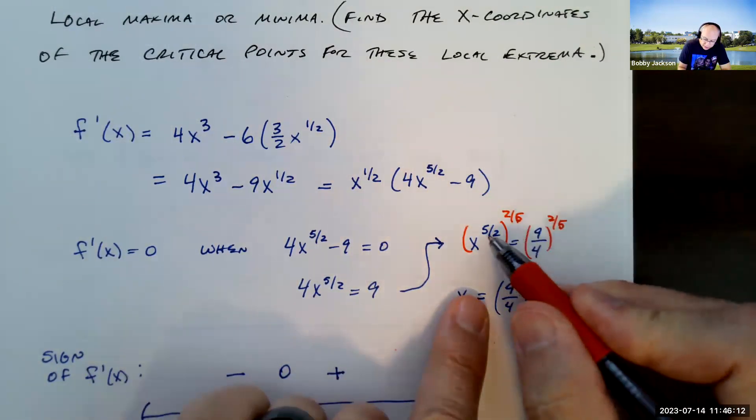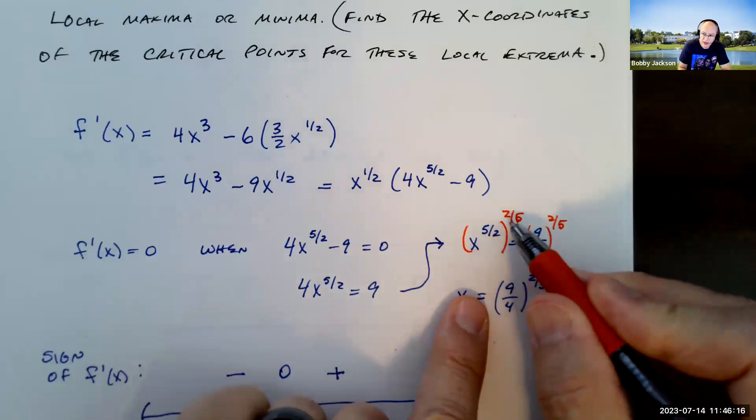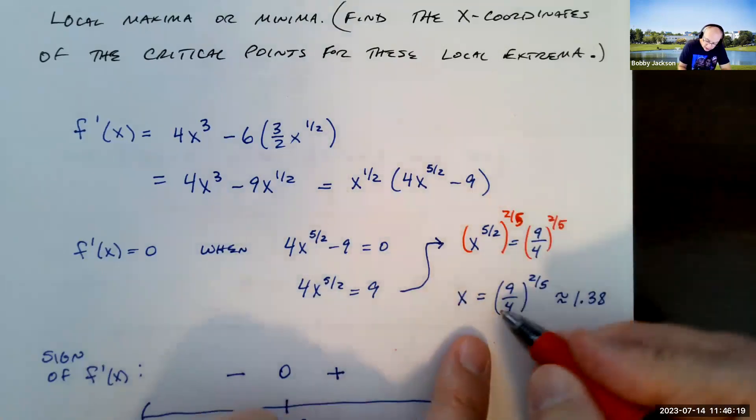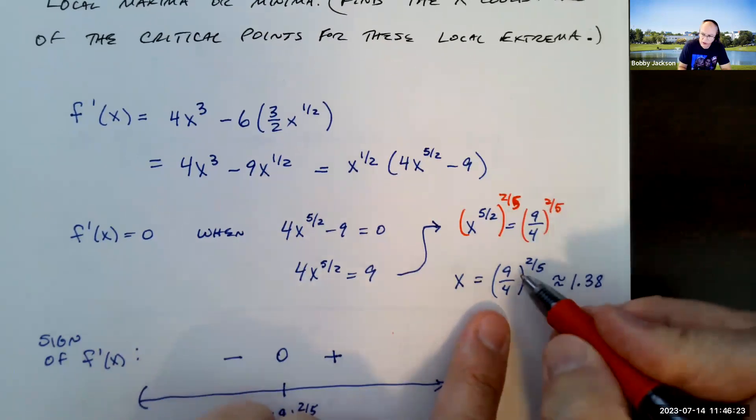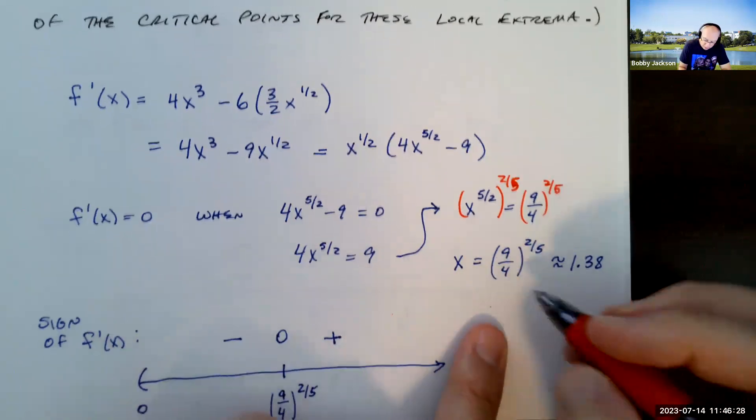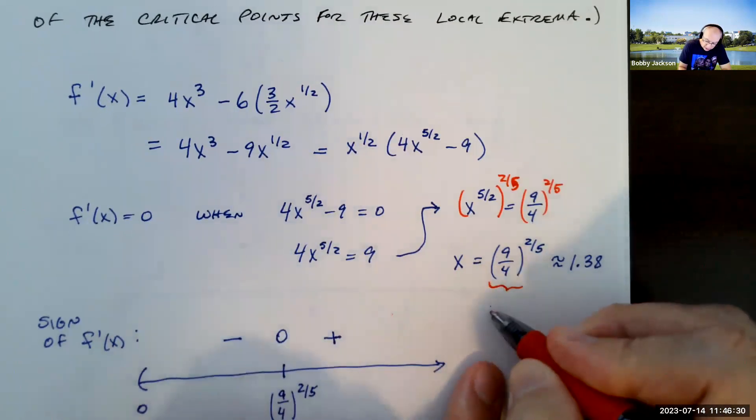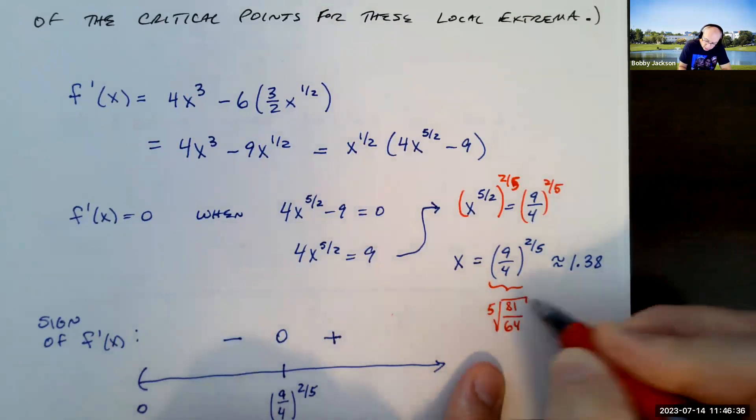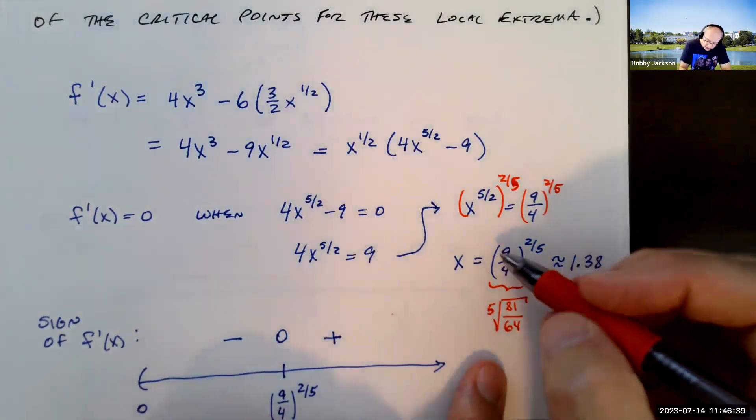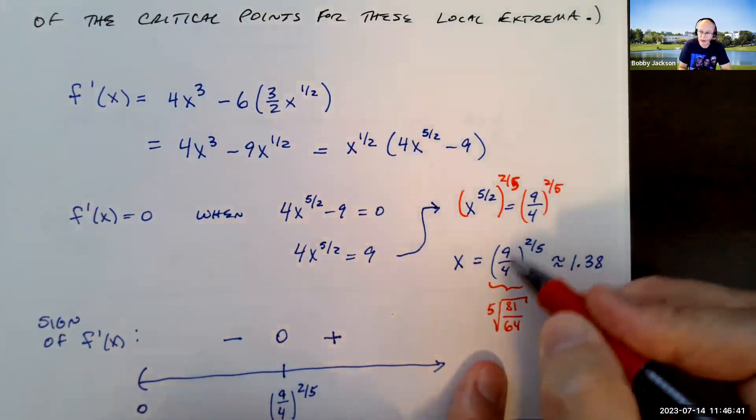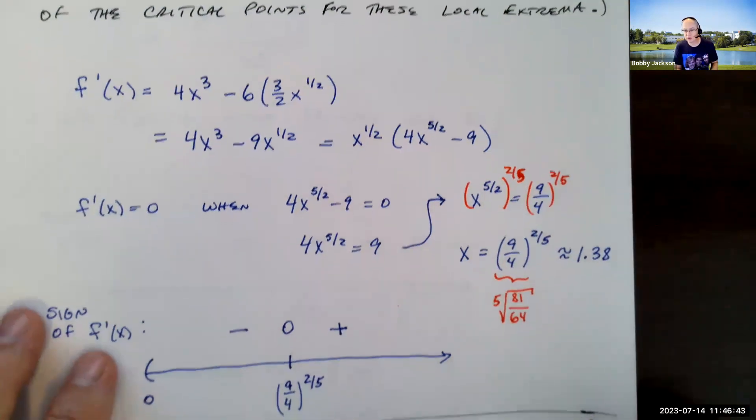And so, of course, five halves to the two fifths, what do we do with the exponents here? We multiply. What's five halves times two fifths? That's one. So we just get x and then nine fourths to the two fifths power. So if you wanted to square, you get 81 over 64ths. This is the same thing as basically the fifth root of 81 over 64ths. It's about 1.38, but this is going to be fine for the answer in this format. They want in fraction form, so you just leave it in that way.